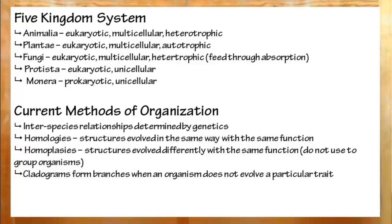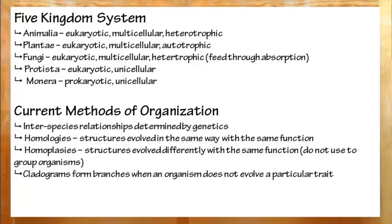The five kingdom system uses: Animalia — multicellular eukaryote, heterotrophic; Plantae — multicellular eukaryote, photosynthetic; Fungi — multicellular eukaryotic, absorbed food; Protista — unicellular eukaryotes; and finally Monera — unicellular prokaryotes. There are some new systems being suggested, such as the eight kingdom system and the three domain system.